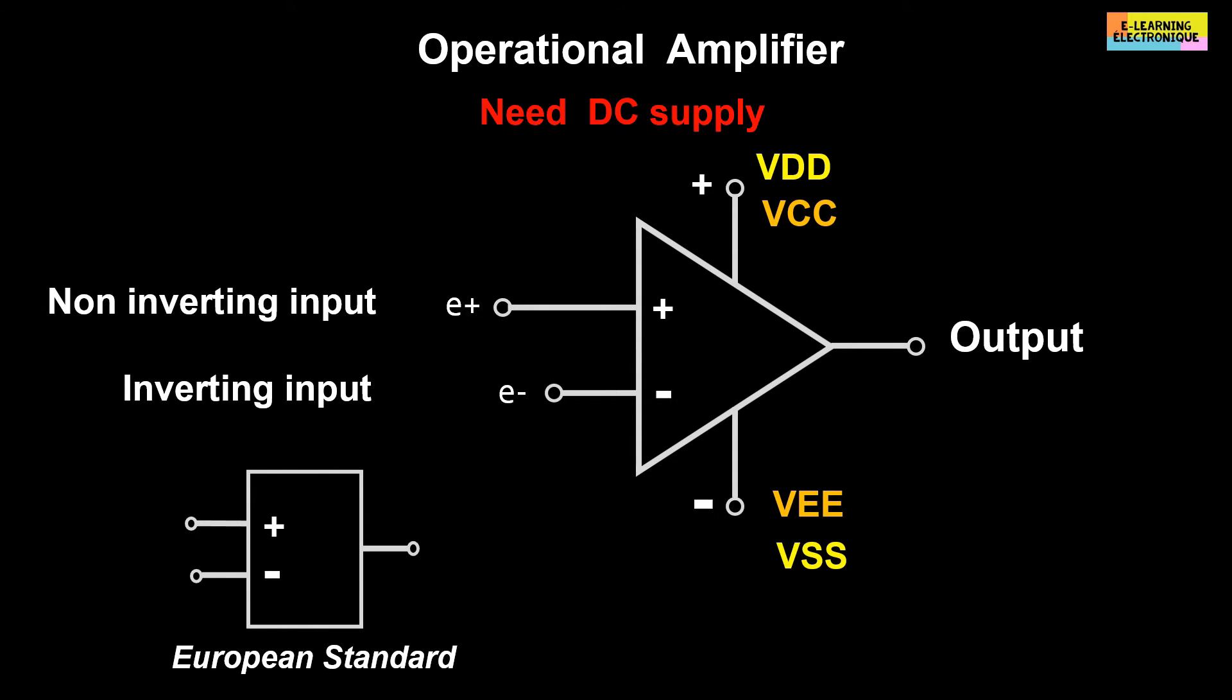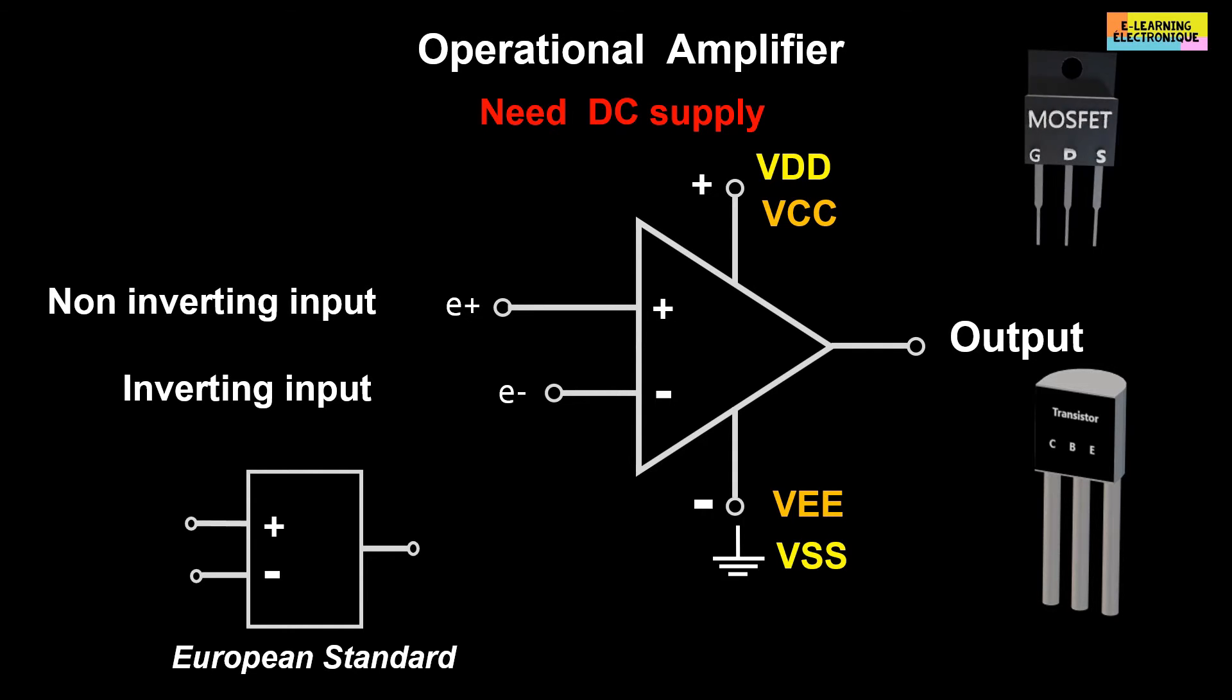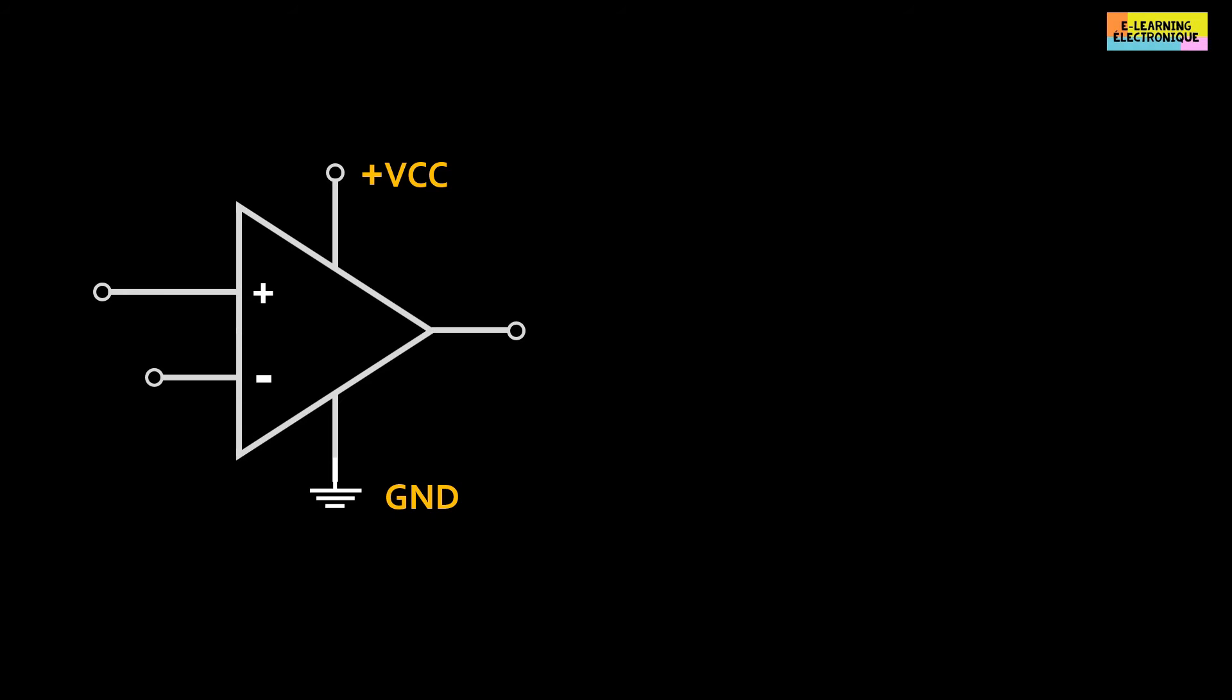VCC and VEE are used for bipolar op-amps. The C is for the collector of the transistor and the E is its emitter. The terminology VDD and VSS is generally reserved for CMOS op-amps. The D is for the drain and the S for the source.